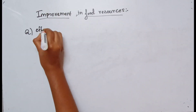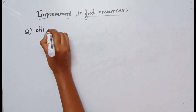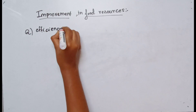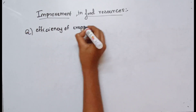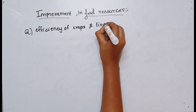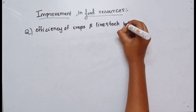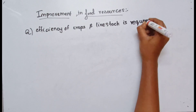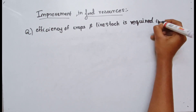The main point is that efficiency of crops and livestock is required in India. In India, we have different crops. We also need to consider what livestock is and why livestock is very important.